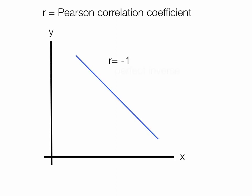So if R is equal to negative 1, we call that a perfect inverse relationship or a perfect negative relationship. If R is equal to plus 1, we call that a perfect direct relationship or a perfect positive relationship.